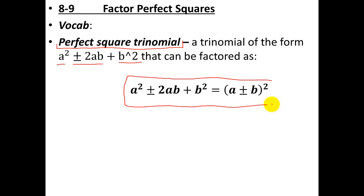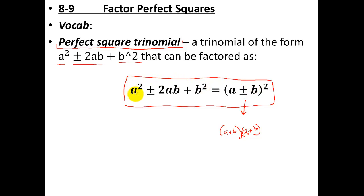Just like the previous section, factoring perfect squares is the reverse of a formula you already know. If you cover up one side and look at the other, this is a shortcut for perfect squares we already learned — how do you multiply out a perfect square? You had to do (a + b)(a + b), and you could not distribute the exponent because this is a binomial. So the method was to multiply it out or memorize this shortcut formula. If you've memorized it to multiply out, it's the exact same shortcut formula to condense it back down again.